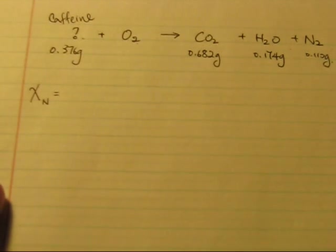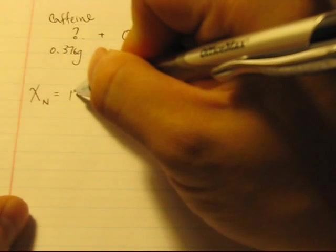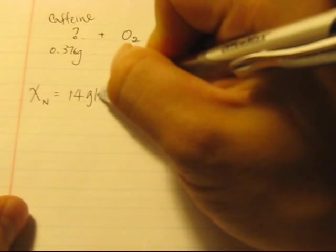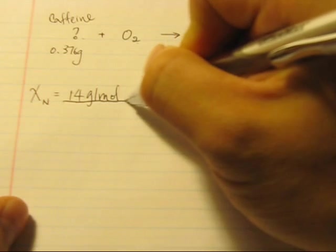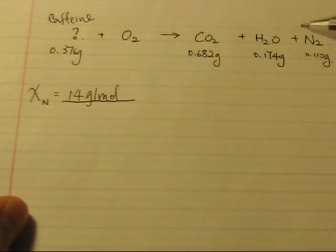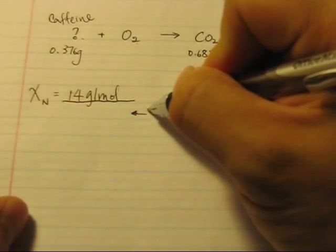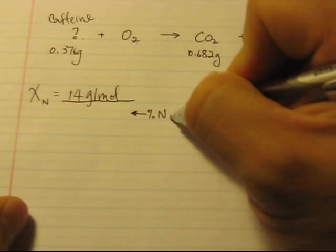So if we are using method 2, we want to calculate the molar mass of the compound based on nitrogen. So we understand that we are going to put the molar mass of nitrogen on top. And at the bottom, we are going to put down the percent of nitrogen in the compound.